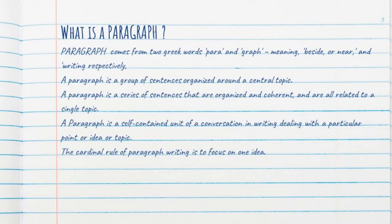What is a paragraph? A paragraph can be called as a group of sentences that introduces, presents and develops one main idea about the topic, and it can be divided into three major parts. The word paragraph comes from two Greek words: 'para' which means 'besides' and 'graph' which means 'write'. Technically, paragraph means to write besides or near.